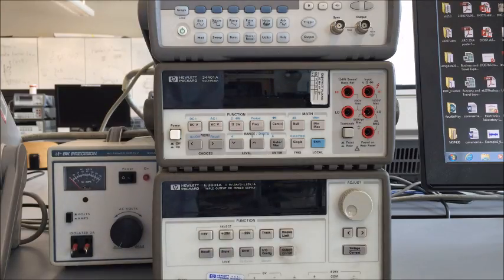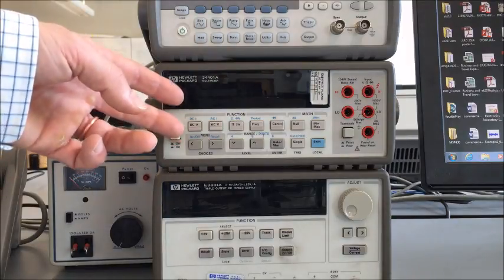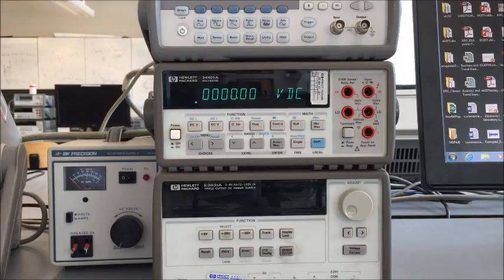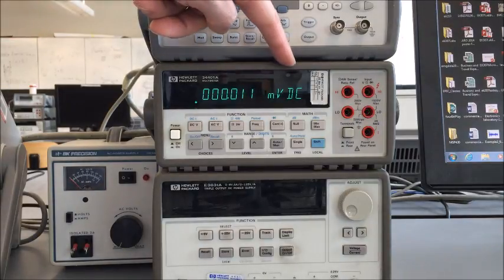This will be a short demonstration to show how to measure resistance using the multimeter. First we turn it on, and when the meter powers up, its default mode is to measure voltage DC.